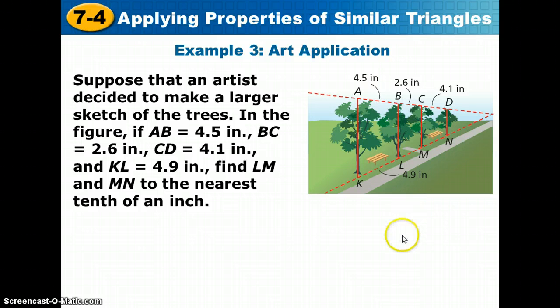So let's go back and take a look at a situation where we have lines that represent these trees. Some artist is making a larger sketch of these trees, so he's got these vertical lines, all vertical lines would be assumed to be parallel, and these perspective lines are our transversals.